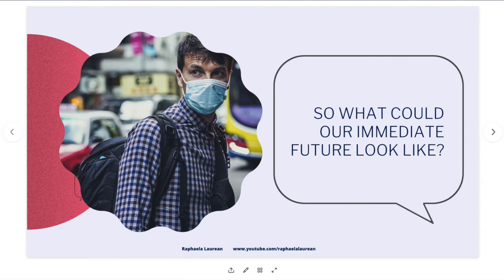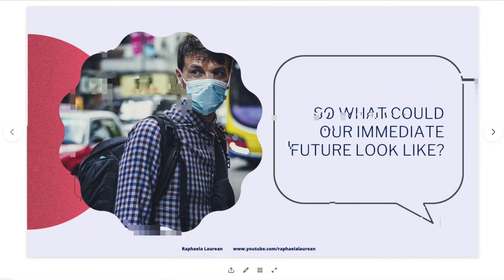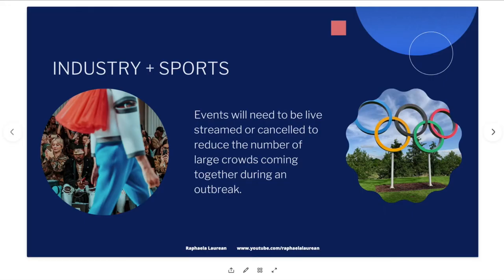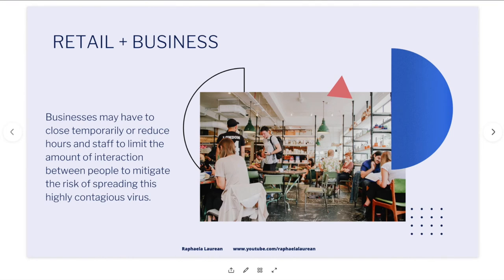Looking forward — it's not all doom and gloom. Let's assume we engage in NPIs like social distancing. That could mean being asked to stay inside for a period of time. Here are some predictions: school and work — people will need to work and attend school from home to participate in social distancing efforts. Industry and sports events will need to be live-streamed or canceled to reduce large crowds gathering during an outbreak.